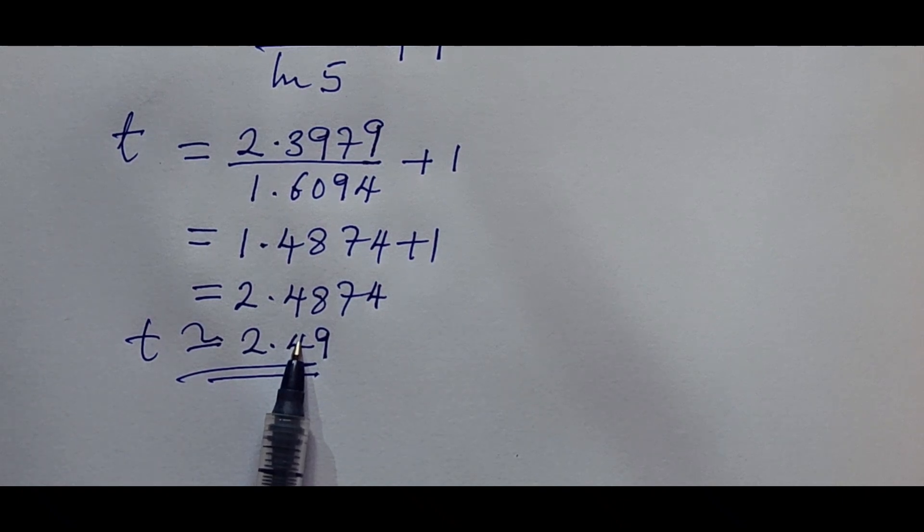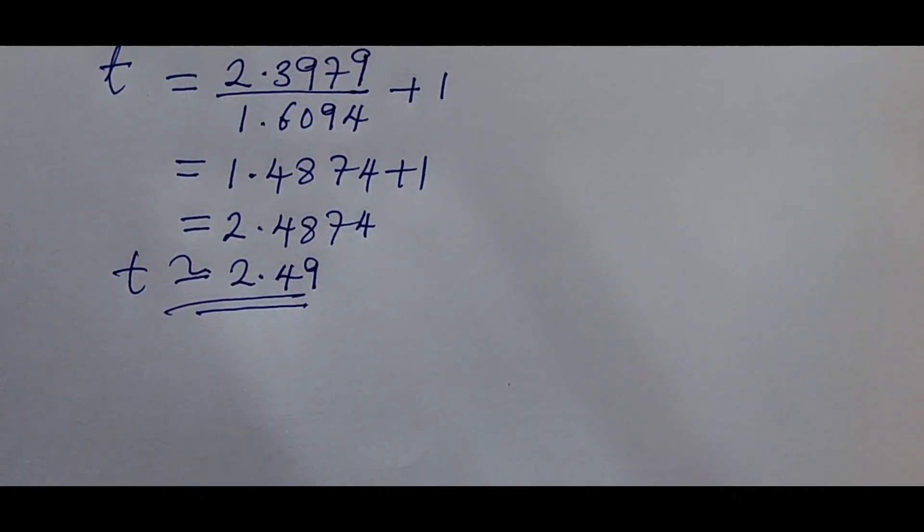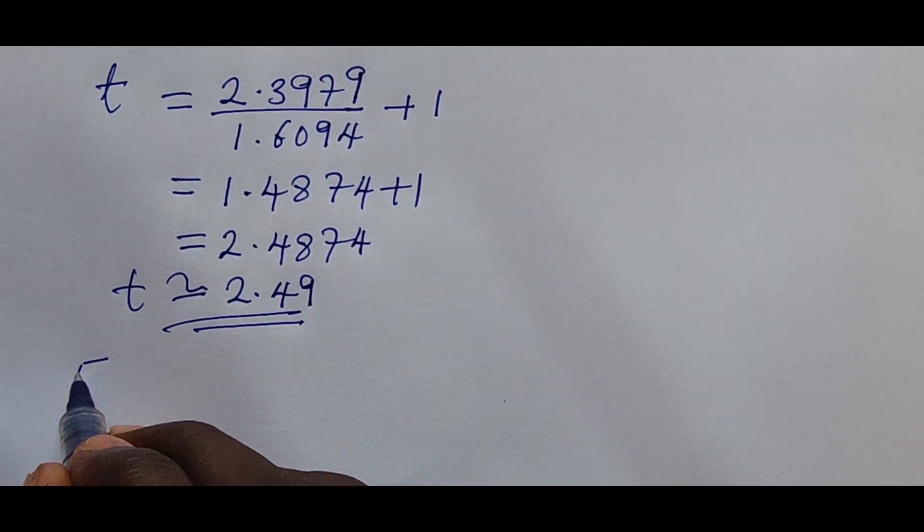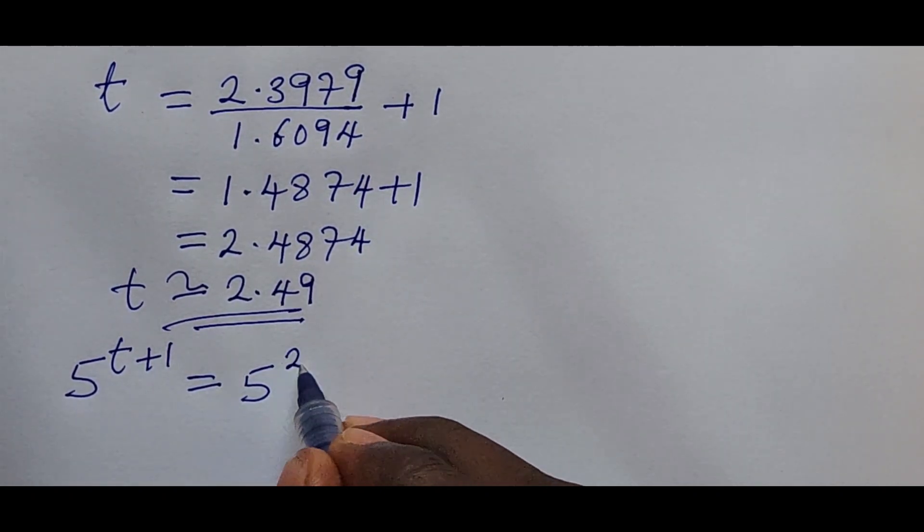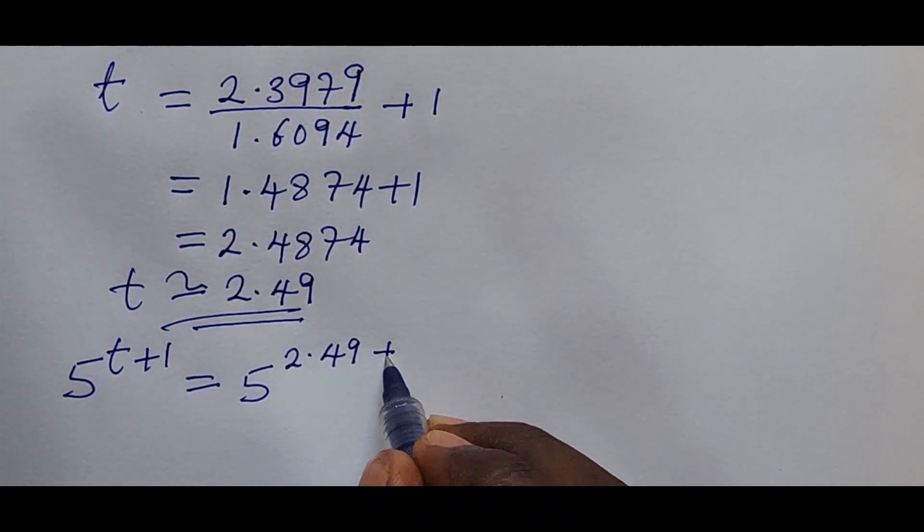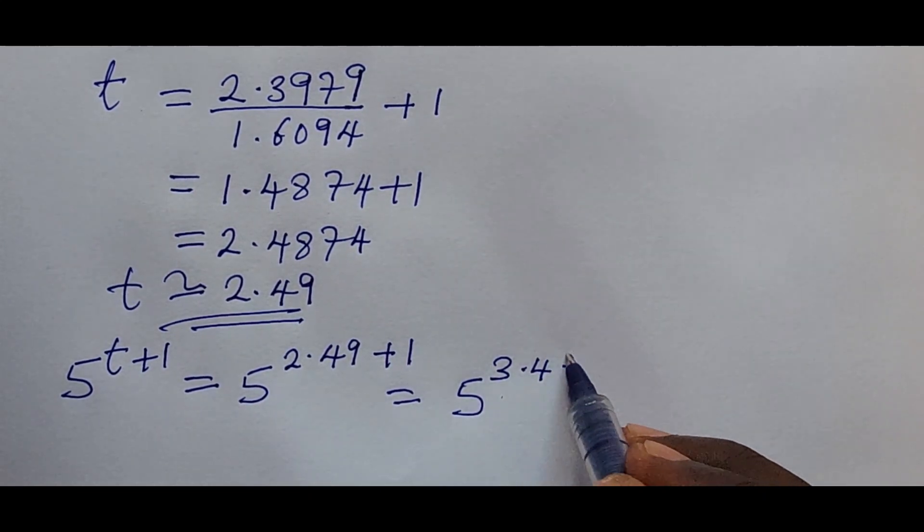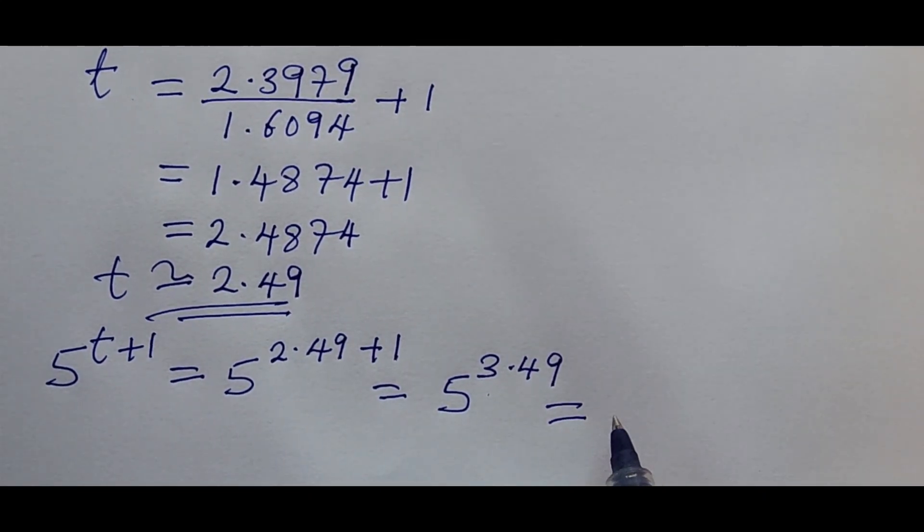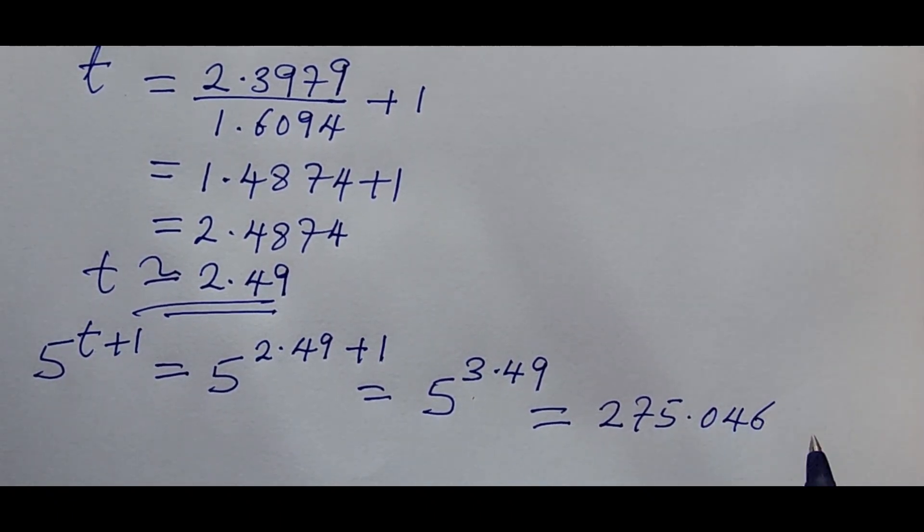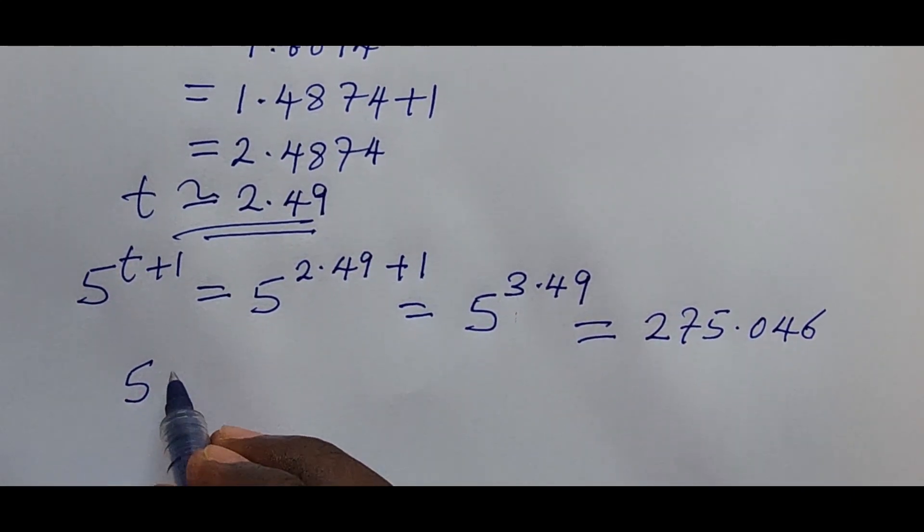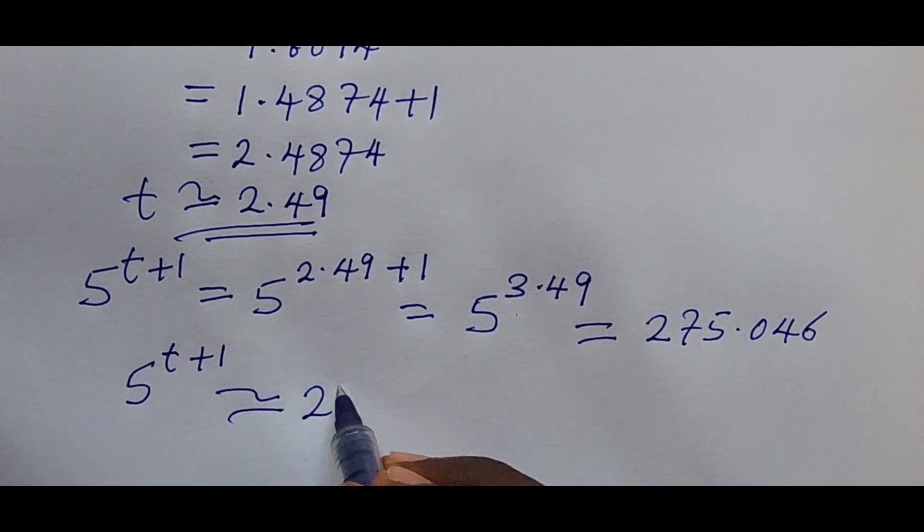Which is 5 to the power of t plus 1. So if we do that, it's going to give us 5 to the power of t plus 1 will be equal to 5 to the power of 2.49 plus 1, which is equal to 5 to the power of 3.49. Now if you include this in your calculator, this will give you 275.046. So approximately, 5 to the power of t plus 1 will now be equal to 275.